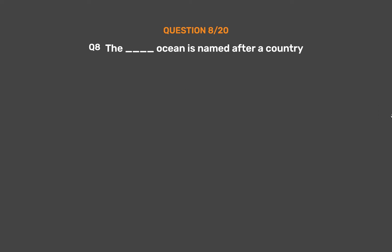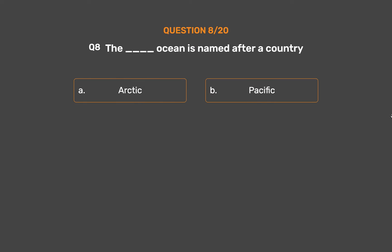Question Number 8. Which ocean is named after a country? Option A: Arctic. Option B: Pacific. Option C: Antarctic. Option D: Indian.